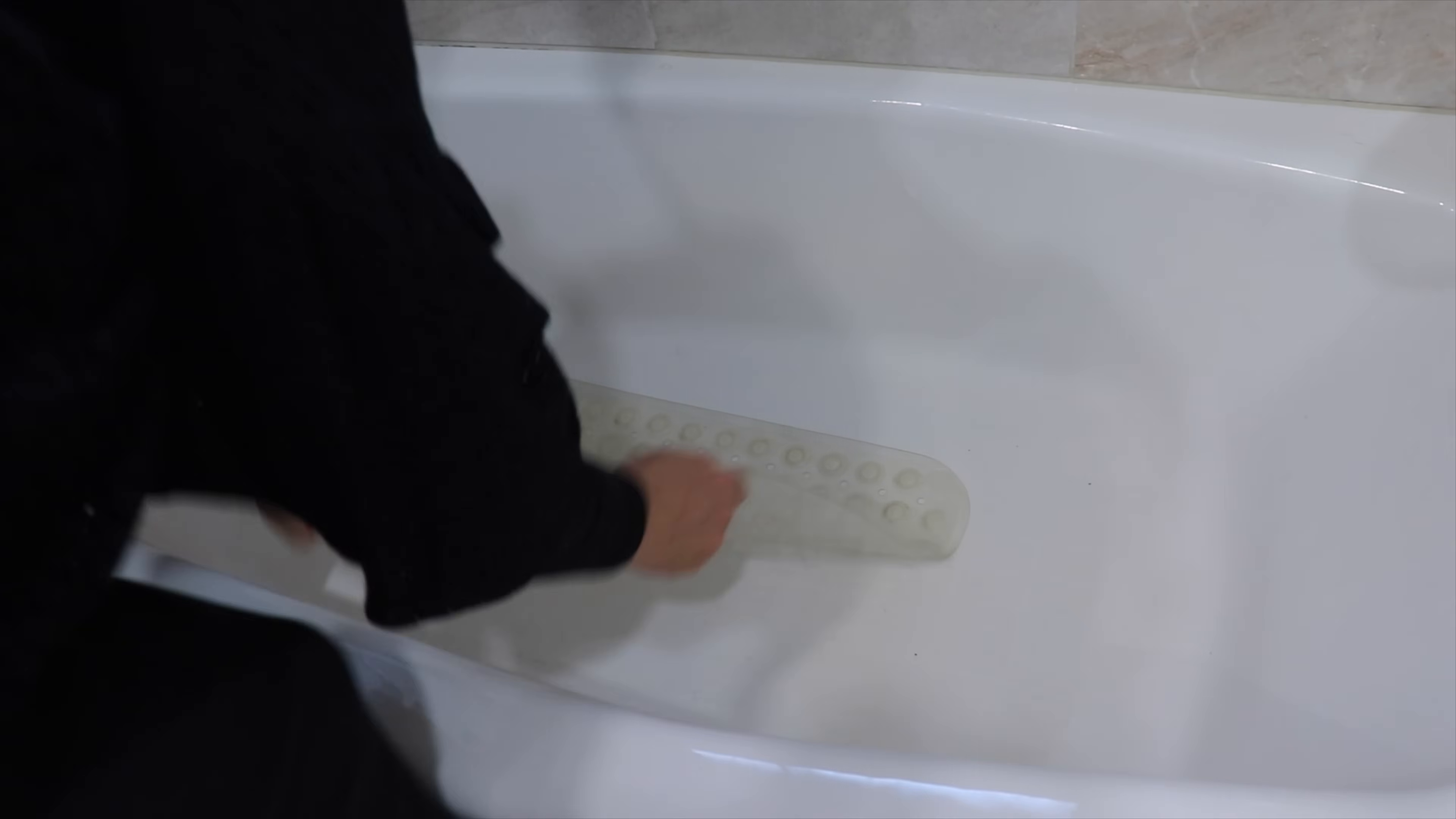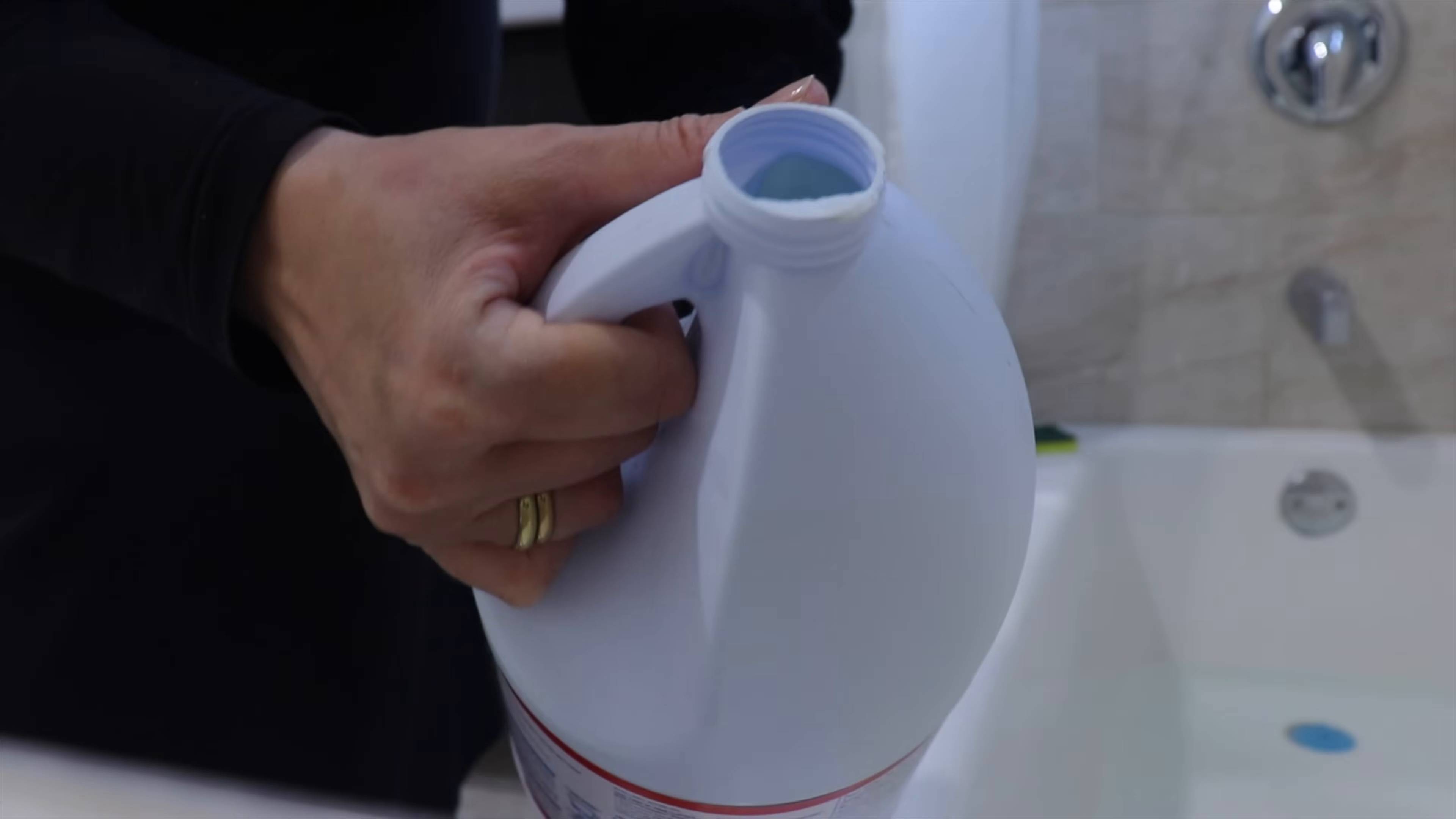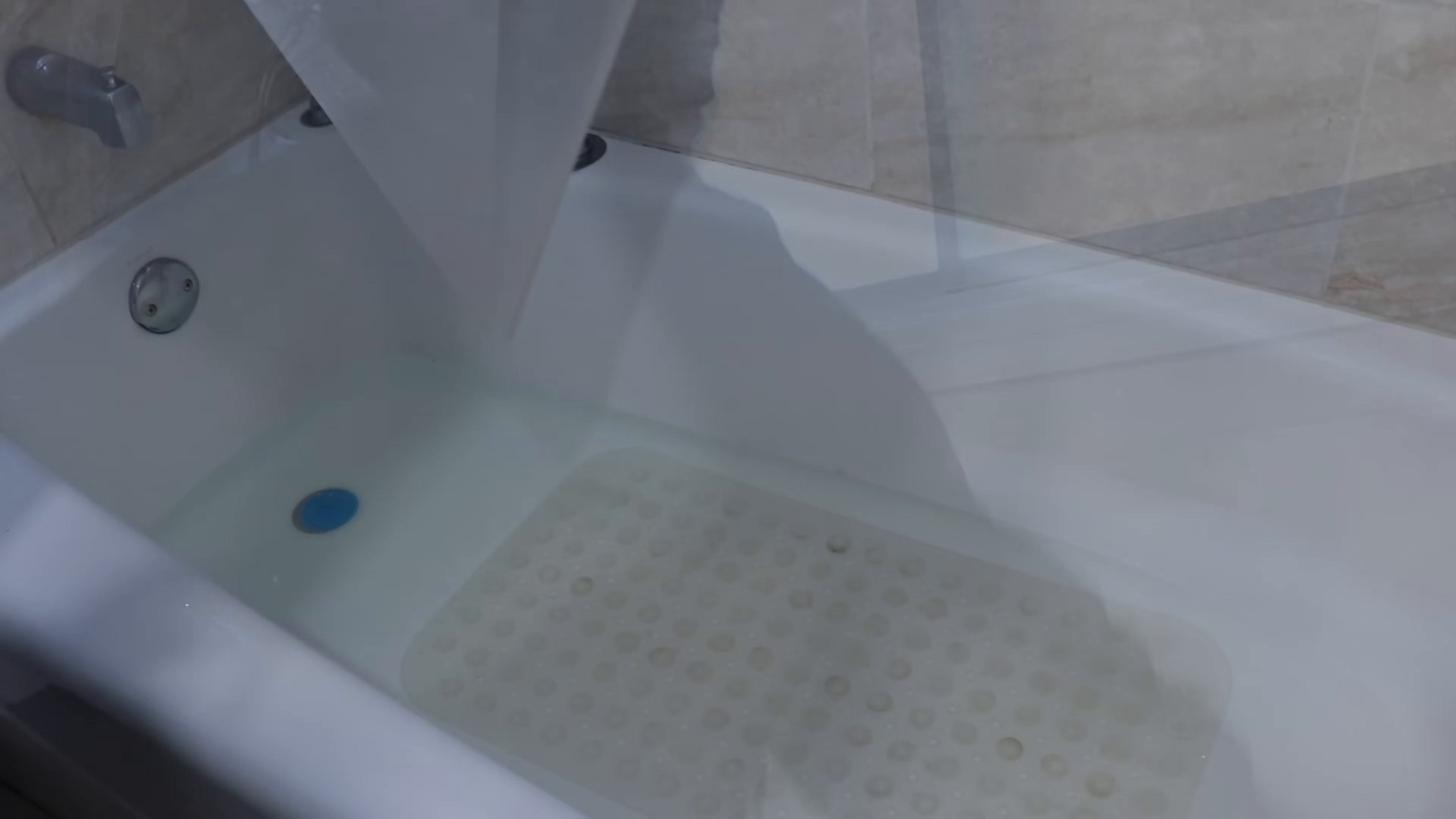I flip the bath mat with the suction cup facing up. Then I will put this super cute bathtub stopper and I will add some cold water. I use bleach to take care of the stains. I use about a cup in a small amount of cold water. I take down the shower curtain and add it with the bath mat in the tub.